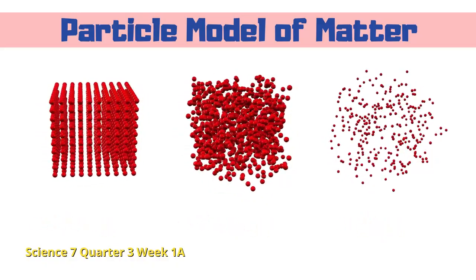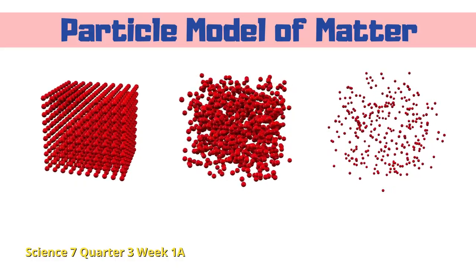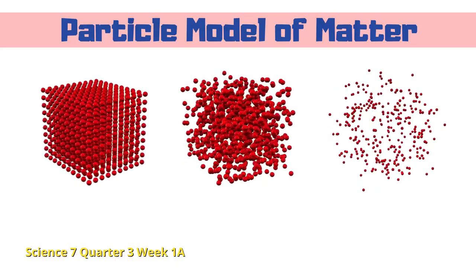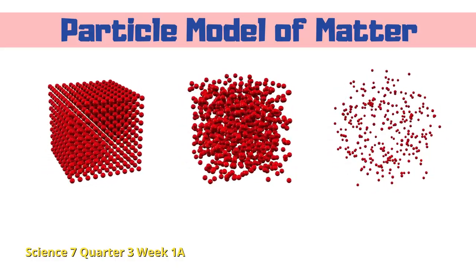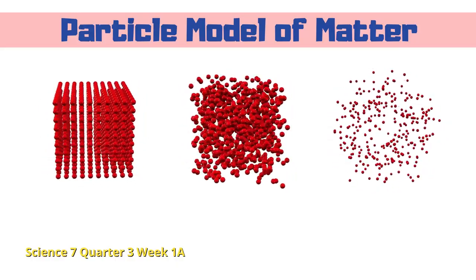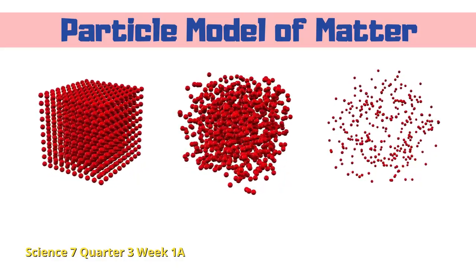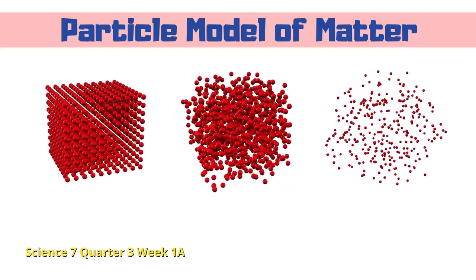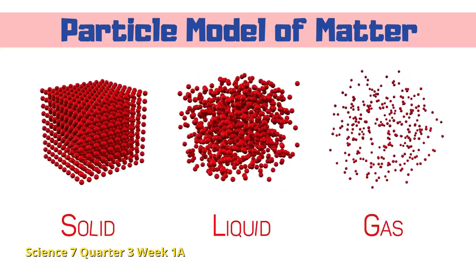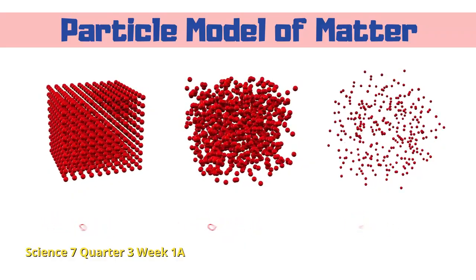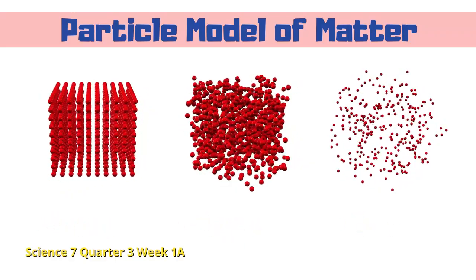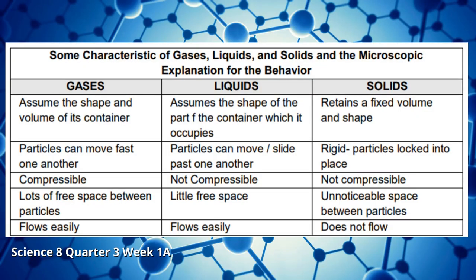Scientists find the particle model useful for two reasons: It provides a reasonable explanation for the behavior of matter, and it presents a very important idea that the particles of matter are always moving. This table summarizes the characteristics of solids, liquids, and gases.